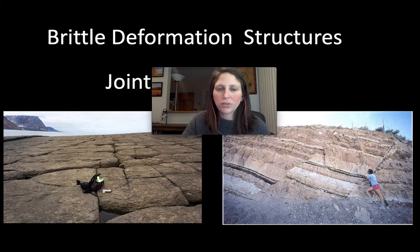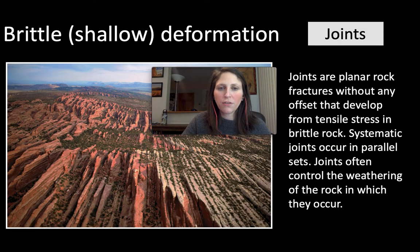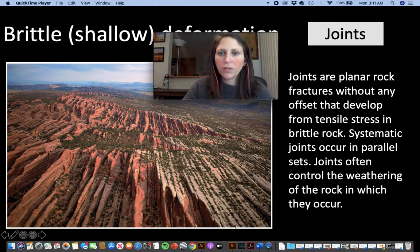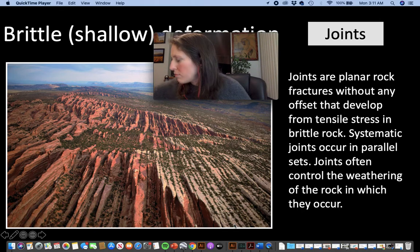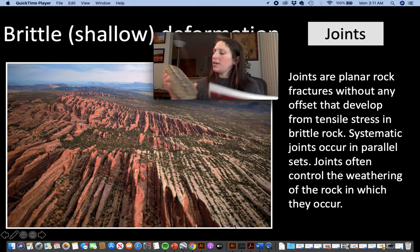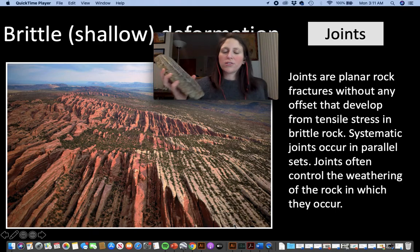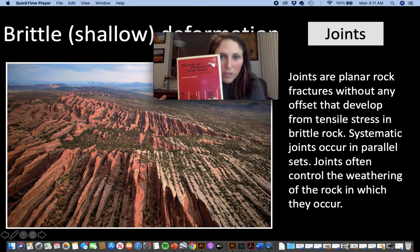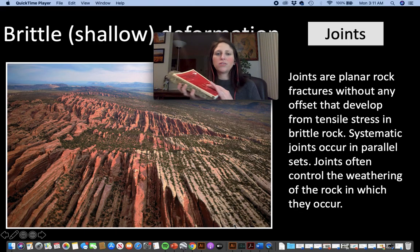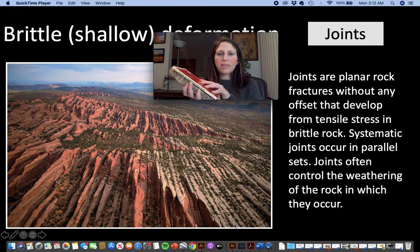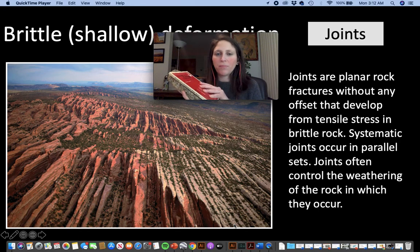Let's look at some brittle types of structures. The first one is joints. Joints are planar rock fractures without any offset. I have a piece of garnet schist here that's been polished, and a book — these are going to represent our two rocks. We'll pretend that this book and this rock were once one rock at one point, and that rock breaks and fractures.